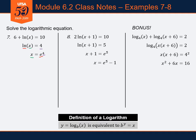This is a quadratic, so we set it equal to zero. Subtracting 16 from both sides gives x squared plus 6x minus 16 equals 0. Factoring: (x + 8)(x − 2) equals 0. Setting each factor to zero gives x equals negative 8 or x equals 2.